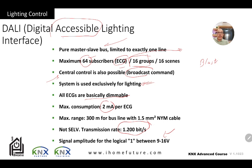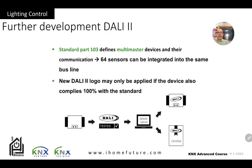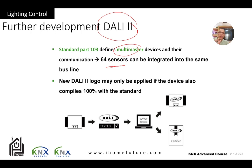DALI 2 is an improvement of DALI 1. It supports multi-master — it's no longer a pure master-slave installation. It still has 64 ballasts or ECGs and 16 groups, but now you can also add sensors or buttons to the DALI system, so it is not only for lighting anymore.